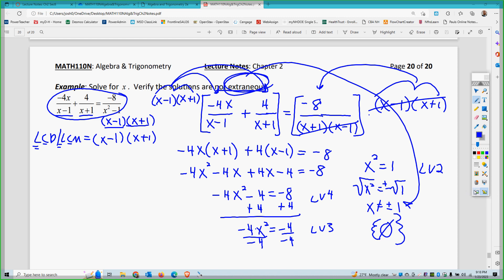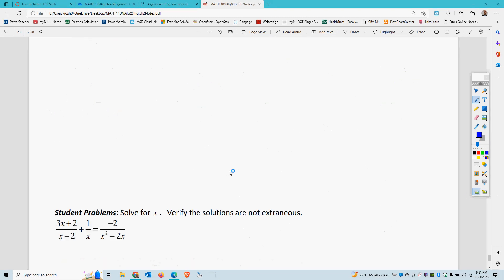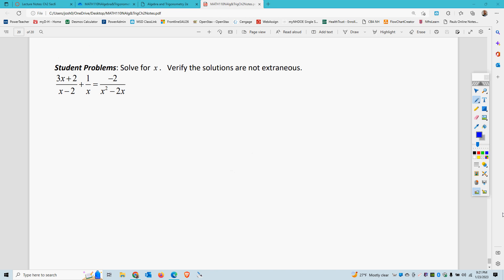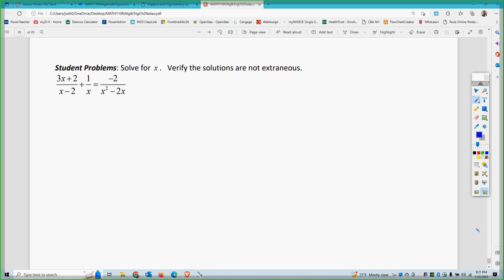Pause the video. Try the next one for yourself. We need to find the lowest common denominator here. We need to factor an x out of here first. I'm left with x minus 2.